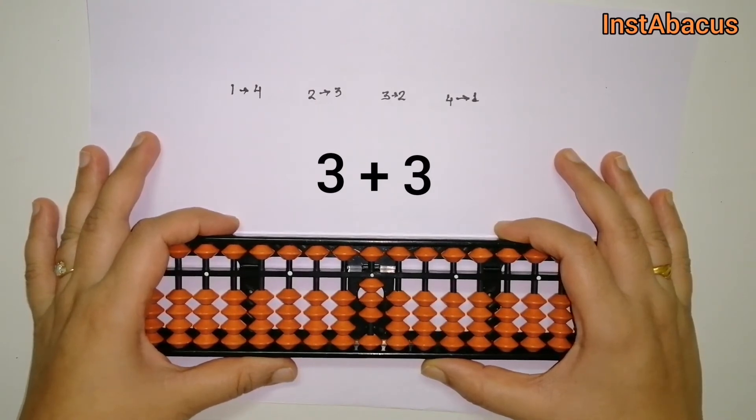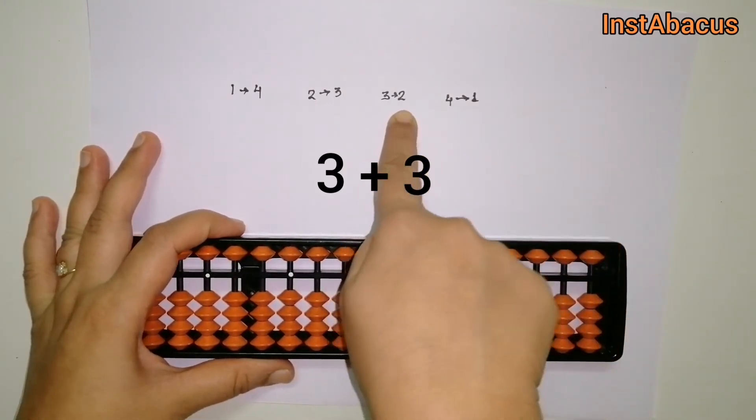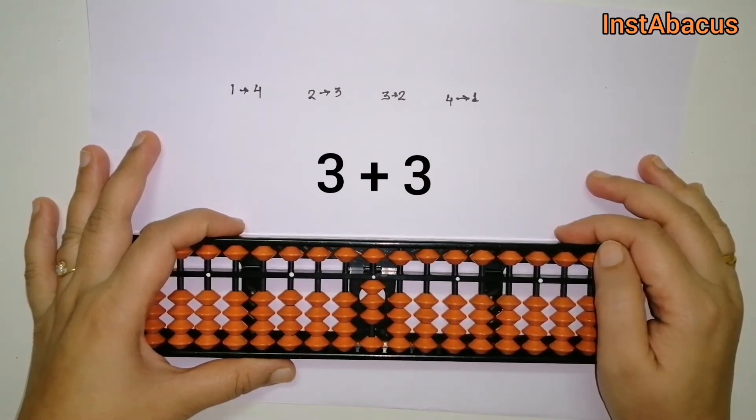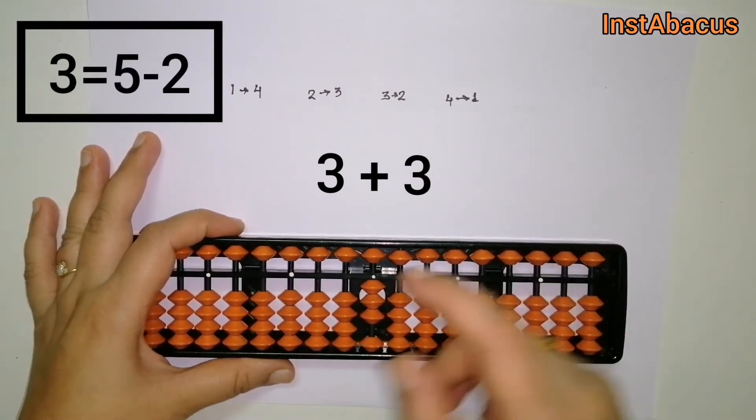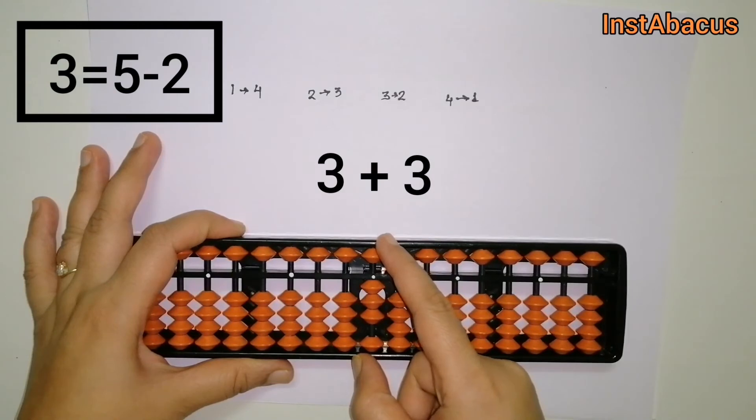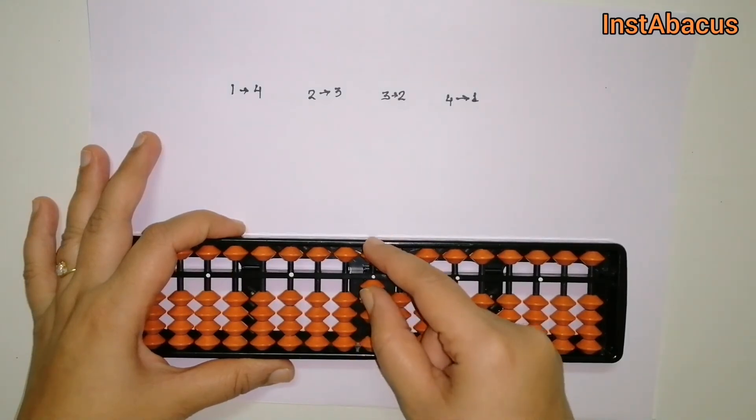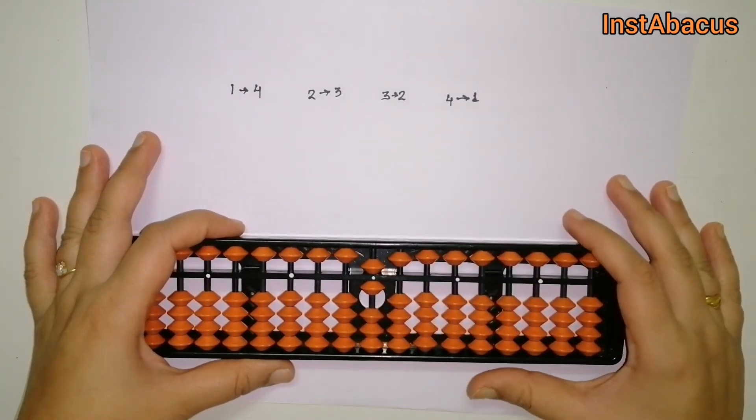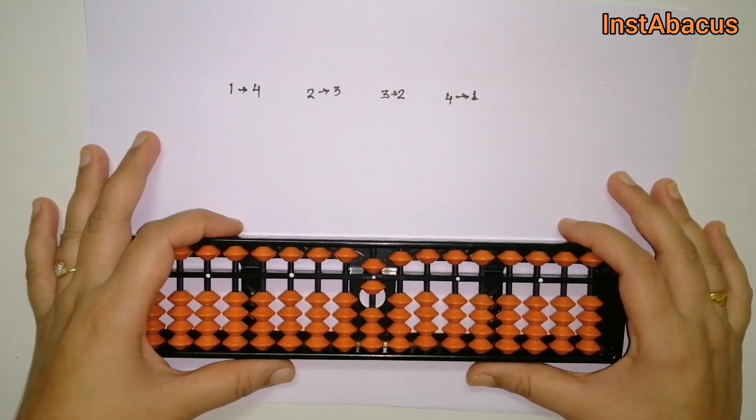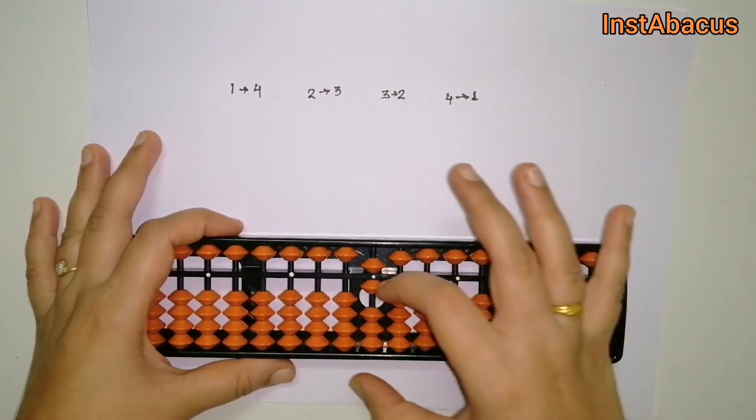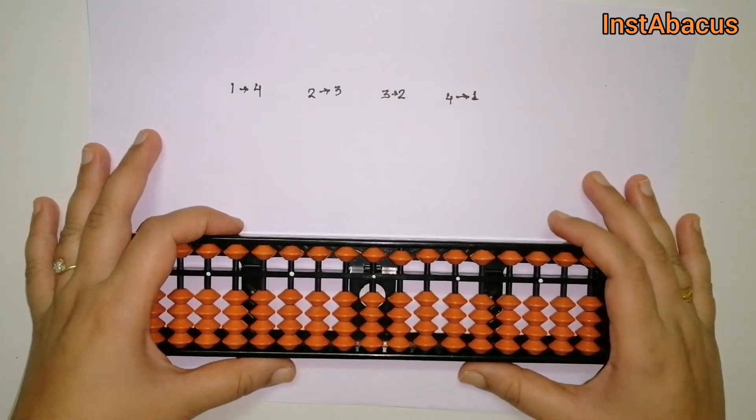The small friend of 3 is 2, right? So for adding 3, we're going to do plus 5 minus 2. So plus 5 and minus 2. The answer is 6. That's correct! One more.